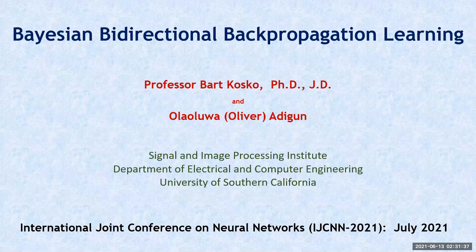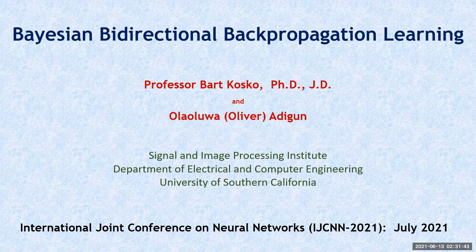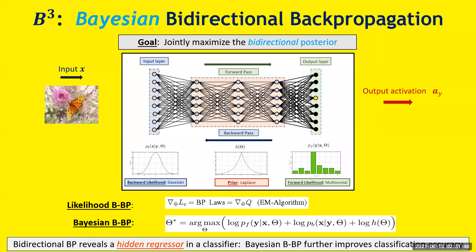This is Bart Cosco from the University of Southern California. I want to introduce a new architecture for neural learning. We call it B-cubed: Bayesian bidirectional backpropagation.